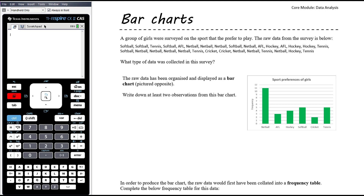The first question is: what type of data was collected in this survey? It's definitely categorical data, and there's no implied order in the sports, so therefore it is nominal categorical data.